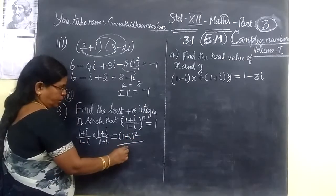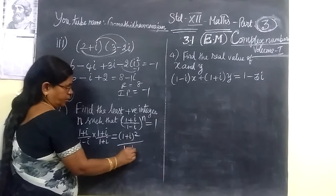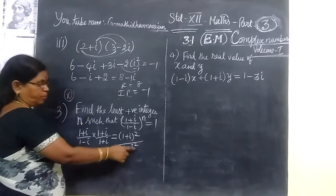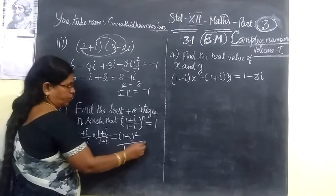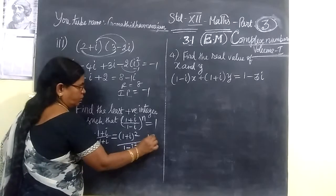And here, a squared minus b squared. So a squared minus b squared. This i squared is minus 1. Minus minus plus. So 1 plus 1, 2. So this is equal to (1 + i).